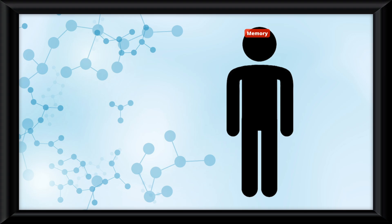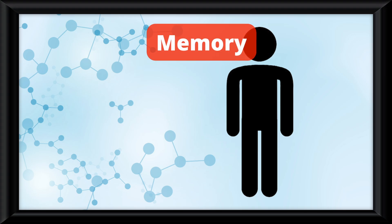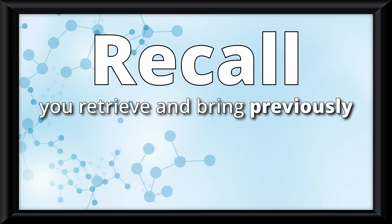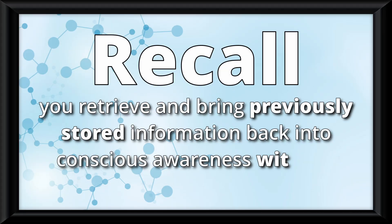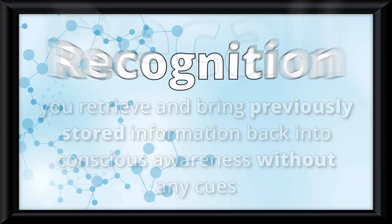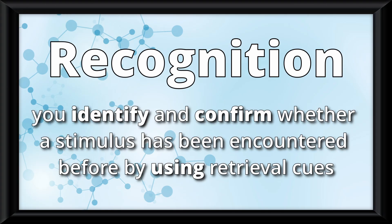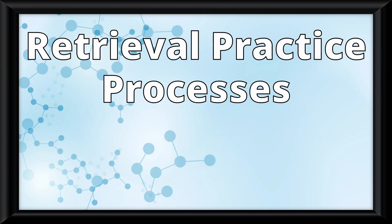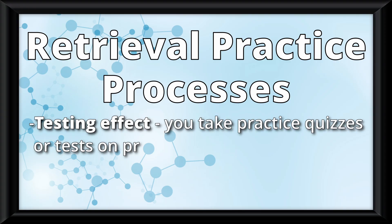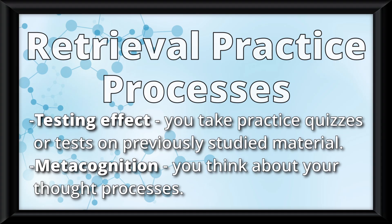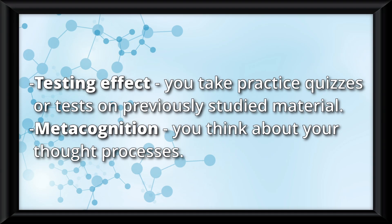I'm sure you've had moments in your life where it took a while to remember something. Memory retrieval occurs by one of two things: Recall, which is where you retrieve and bring previously stored information back into conscious awareness without any cues, or Recognition, where you identify and confirm whether a stimulus has been encountered before by using retrieval cues. You will have more successful retrieval if you use specific retrieval practice processes, like the testing effect — where you take practice quizzes or tests on previously studied material — or Metacognition, where you think about your thought processes. Both of these are proven ways to better retrieve memory.